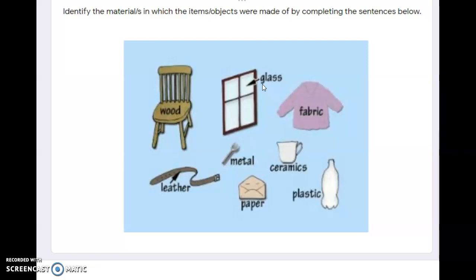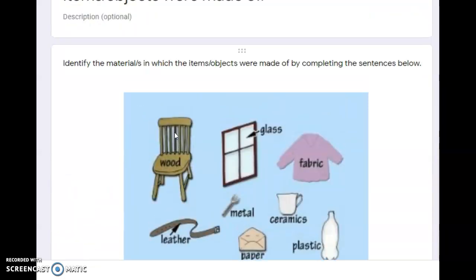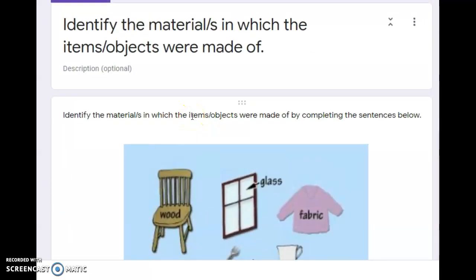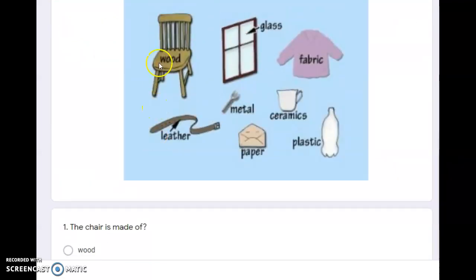For this activity, imagine that there's no wood, glass, fabric, plastic, paper, ceramics, metal, and leather labeled in the picture. You're just going to identify - if the word wood is not here, will you be able to know that this chair is made of wood? What you're going to do is complete the sentences. For example, picture one: the chair is made of what? This is just an example, so you will see all the words listed.